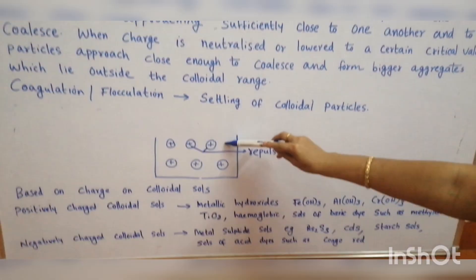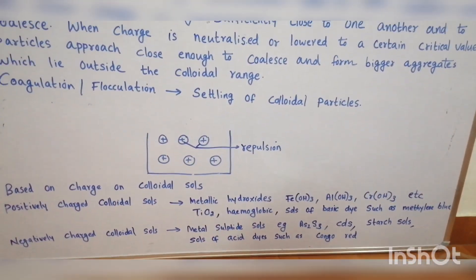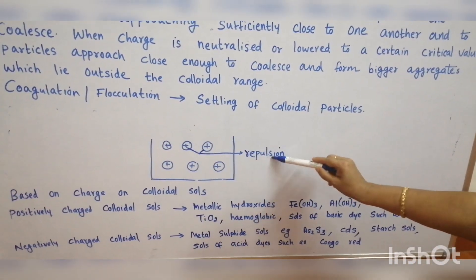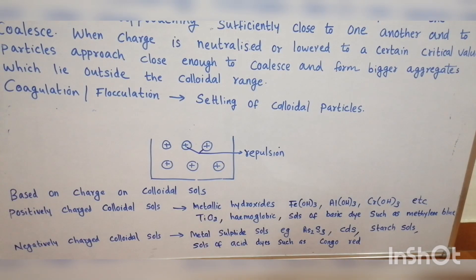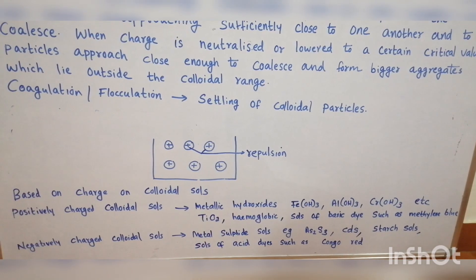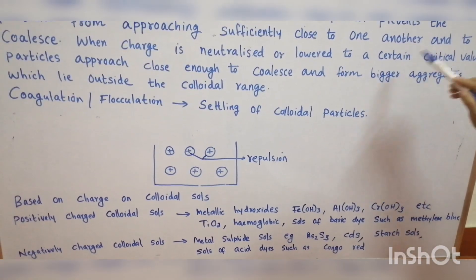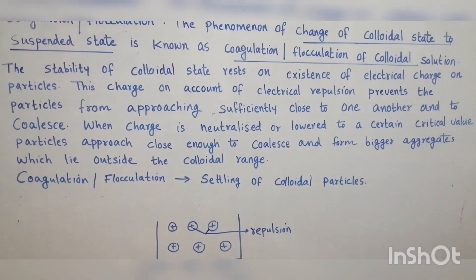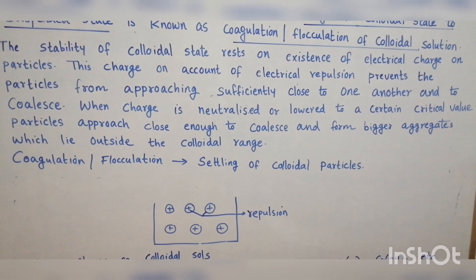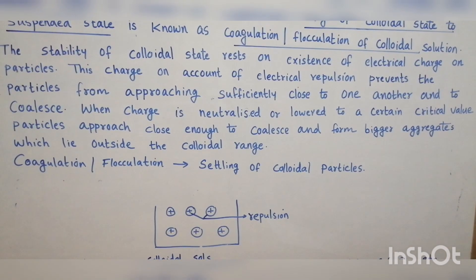We can represent this in a figure: positively charged particles repel each other, so that repulsion prevents them from coming closer. The electric charge prevents the particles from getting closer to each other and becoming a bigger mass.